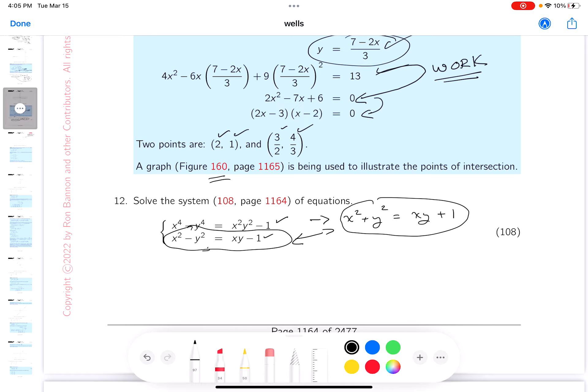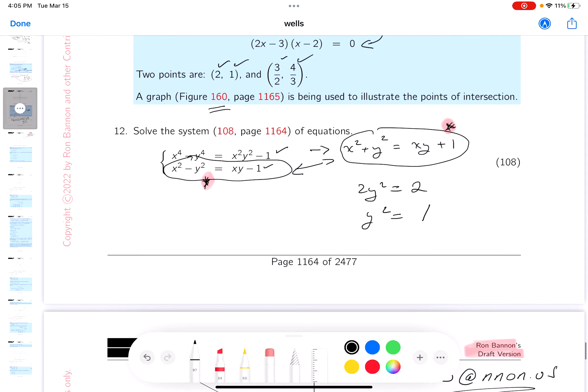I'm gonna take this one and subtract this one, see what happens. X squares would disappear. You know what, I'm gonna reverse that. I'm gonna take this and subtract this, so the x squares disappear and you get two y squared. XY minus XY, that disappeared. And one minus a minus one is two, so y squared equals one. Boy, that was easy.